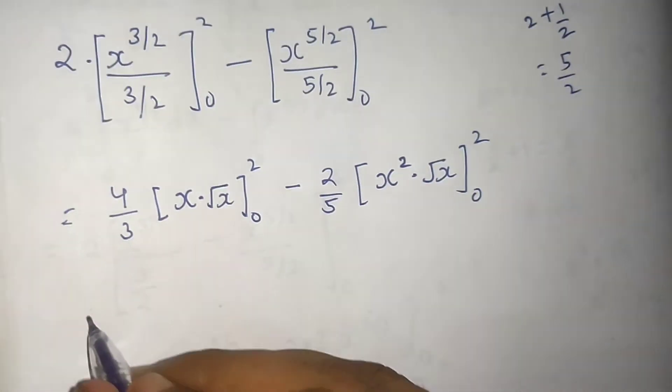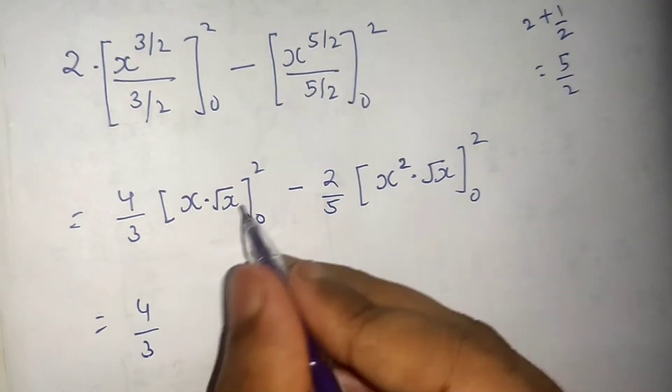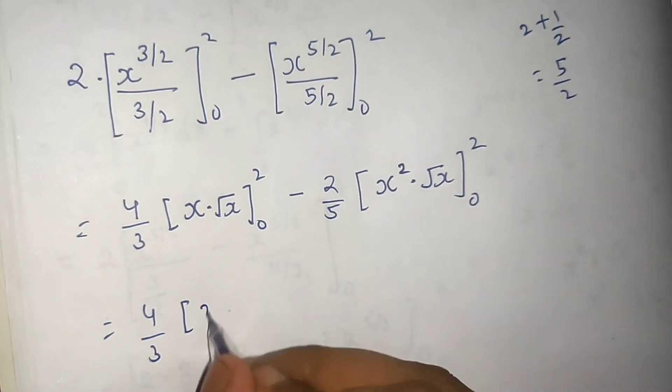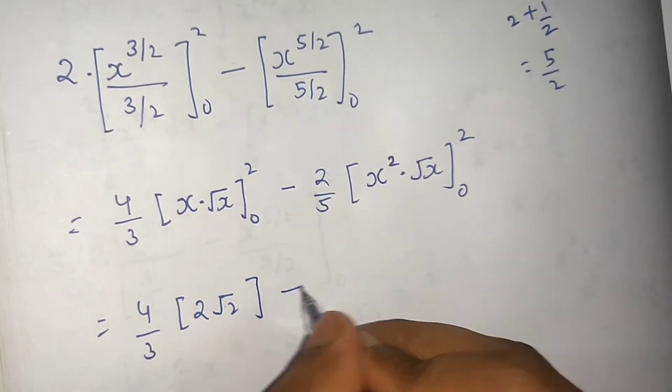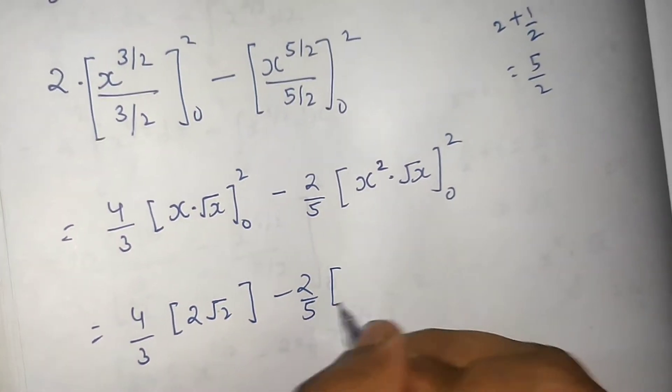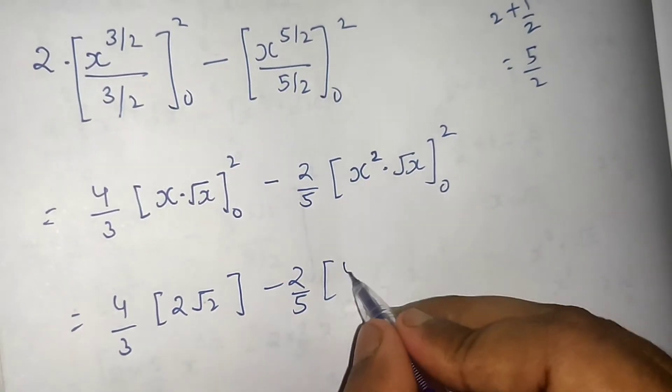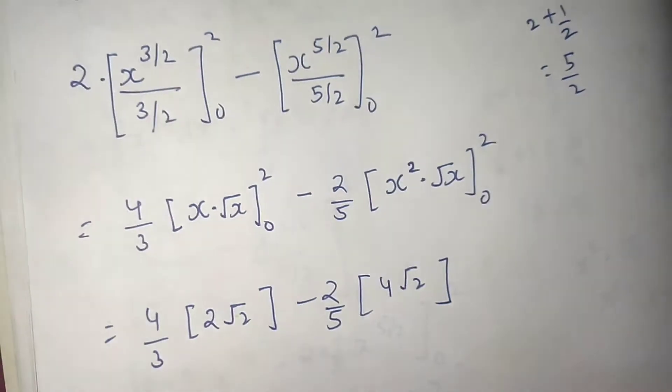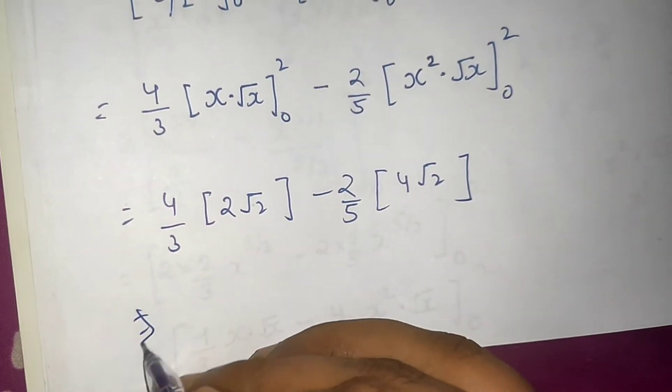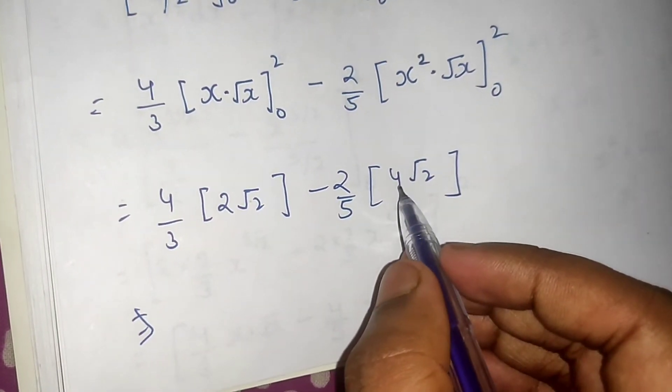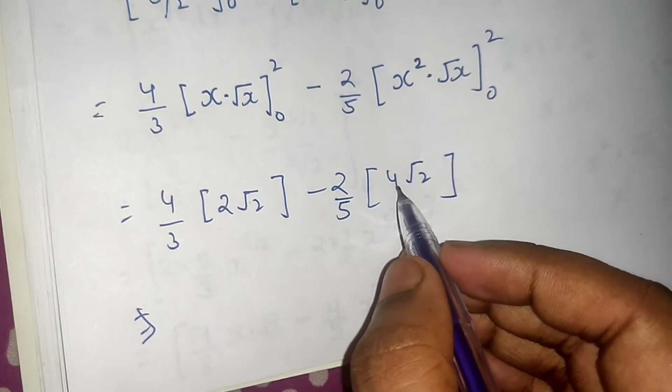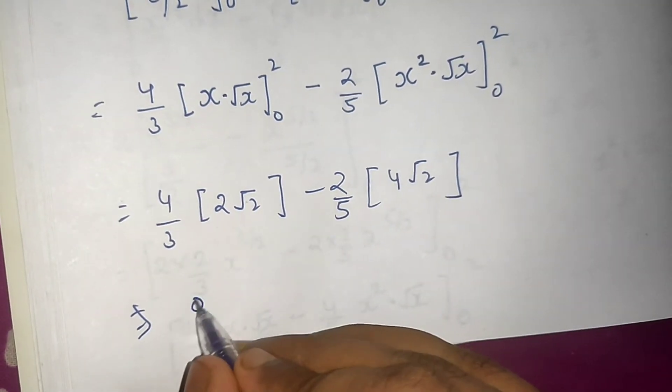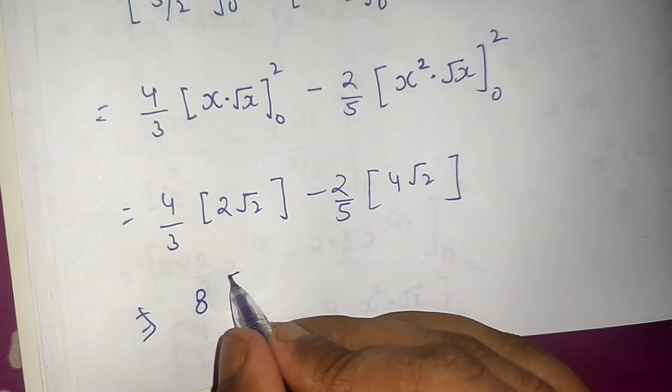Now this is 4 by 3. If you put 2 here you will get 2 root 2. If you put 0 you will get 0. Minus 2 by 5, if you put 2 here you will get 4 root 2. Again if you put 0 you will get 0. Now what I can do, I can easily see that I am getting 8 common from both. So 8 I take common.